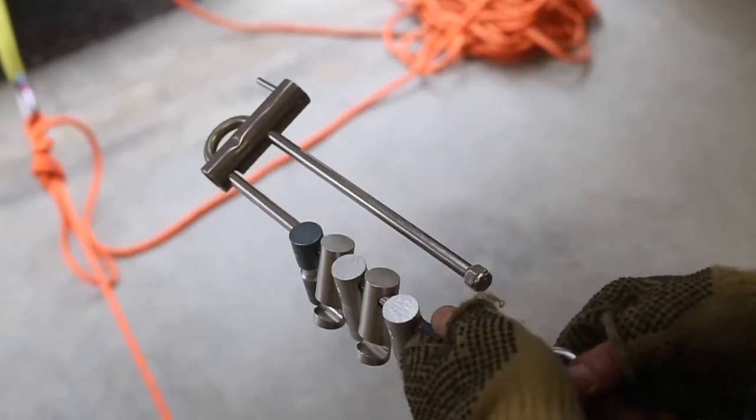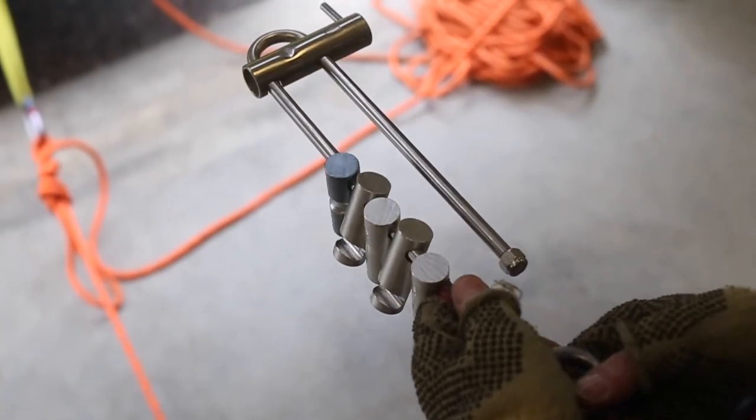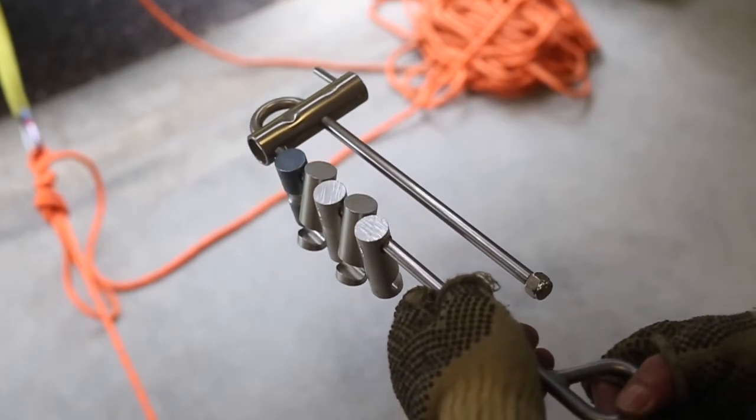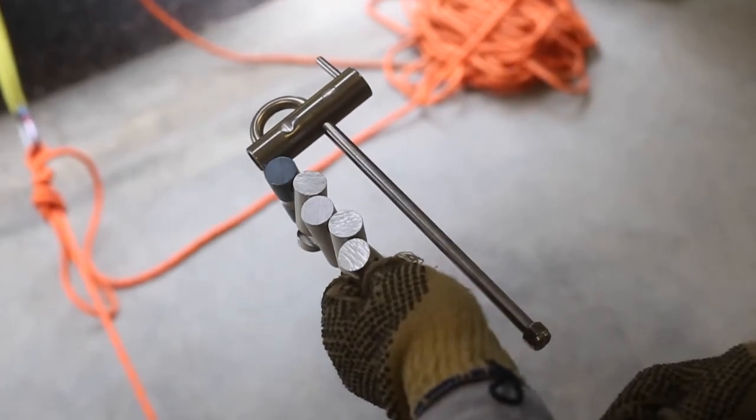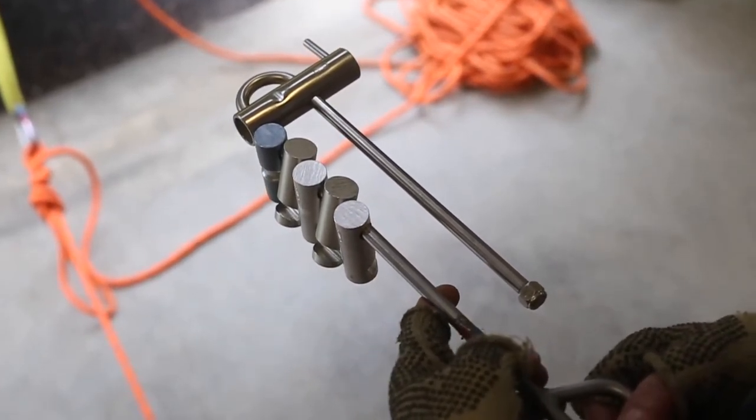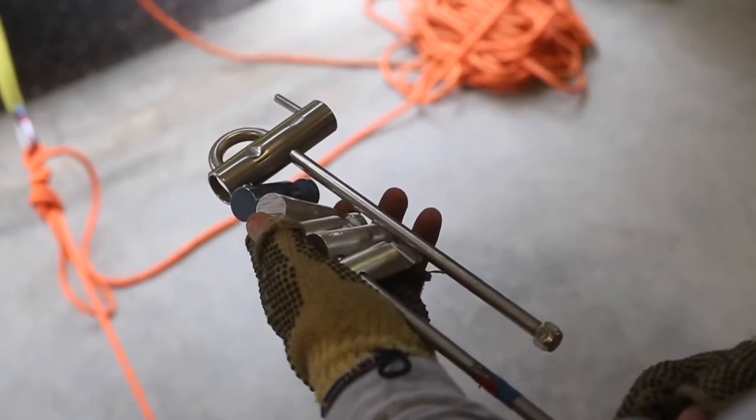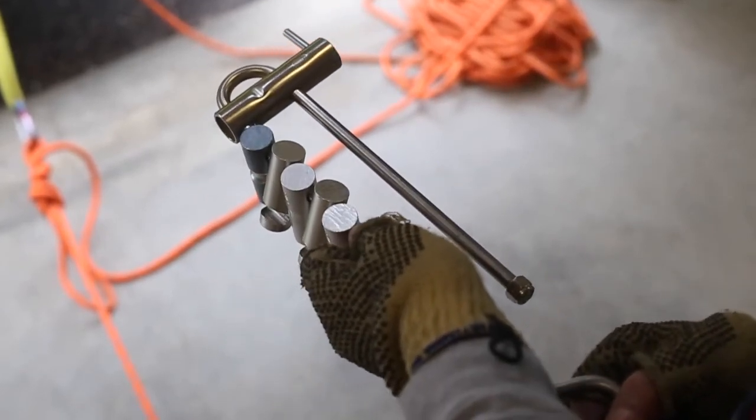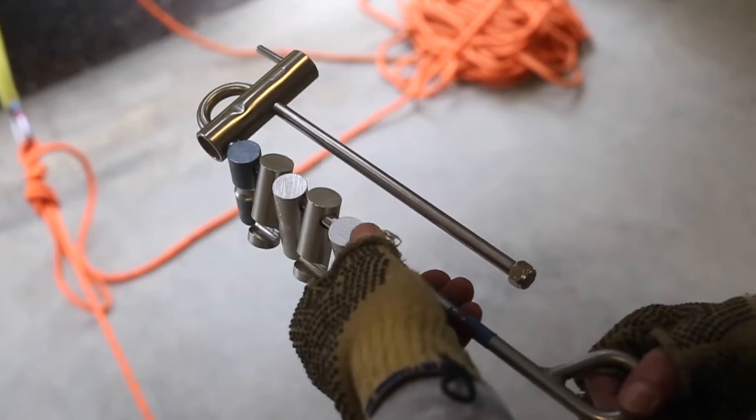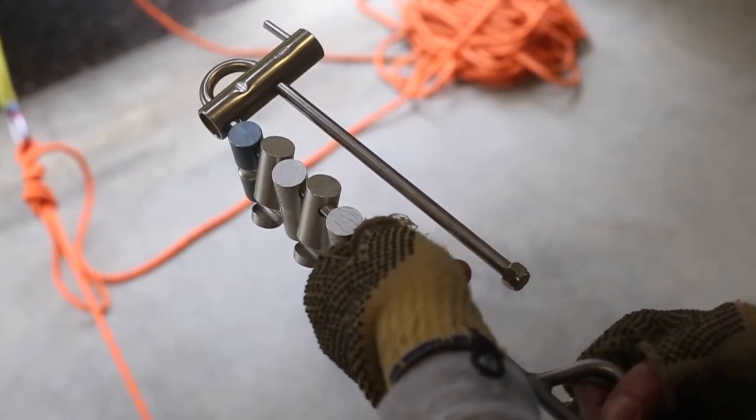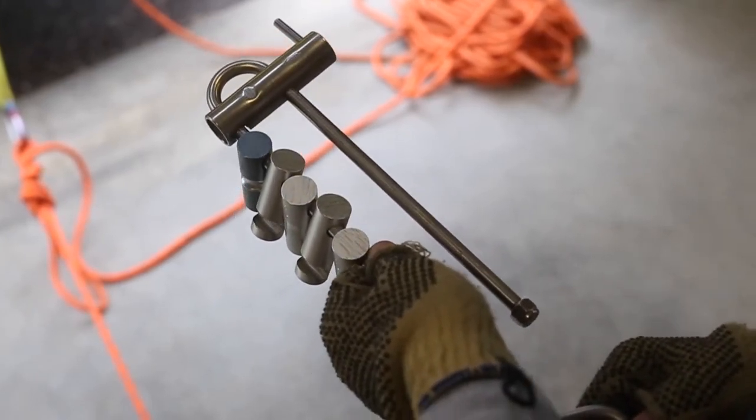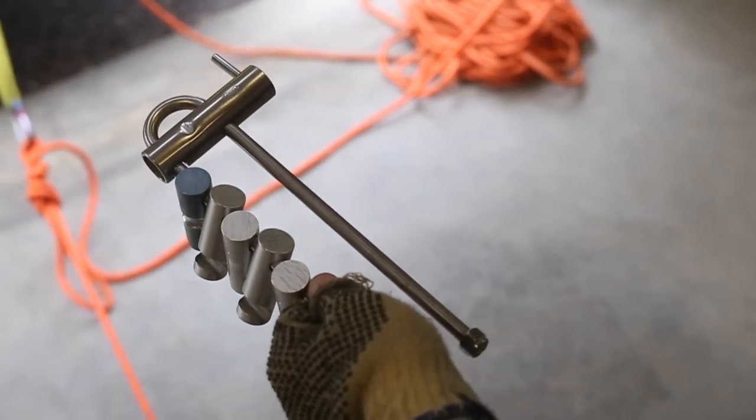Let's take a look at how to rig and operate a six bar brake rack for rappelling. This is an excellent tool for the rescuer to use as you have the ability to vary the amount of friction, so it can be used for a single person load as well as for rescue loads and is great for doing pick offs.